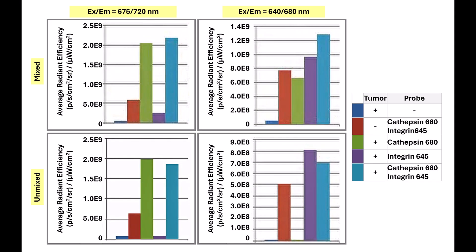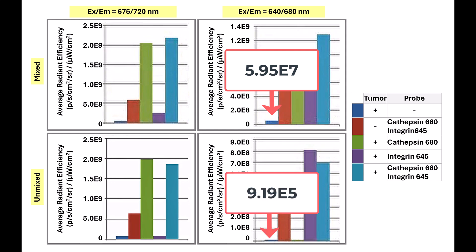For our analysis we will compare data before and after unmixing. To circumvent the necessity of spectral unmixing you would need near background signal intensity in control animals when the non-specific filter pair is analyzed. For example, we want to see levels close to the autofluorescence background in mouse number 3 when the 640-680 filter pair combination is used, and background levels in mouse number 4 when the 675-720 filter pair is used. This would indicate low crosstalk. However, you can see that before unmixing there was significant bleed through of both probes. Spectral unmixing will correct for this. After unmixing, the signal bleed through has been eliminated. Autofluorescence background signal was also reduced after unmixing from 5.95e7 to 9.19e5.